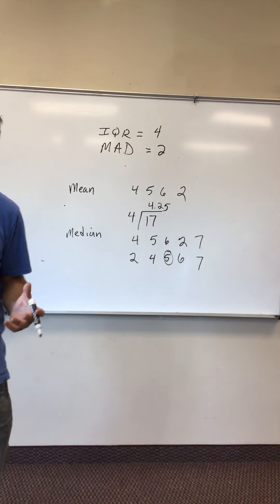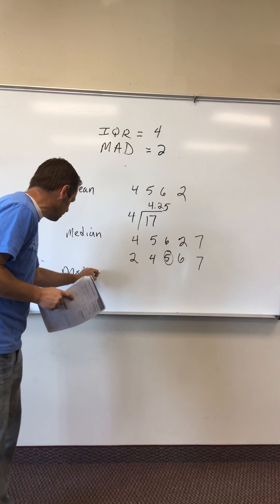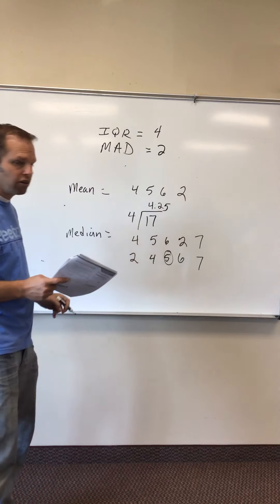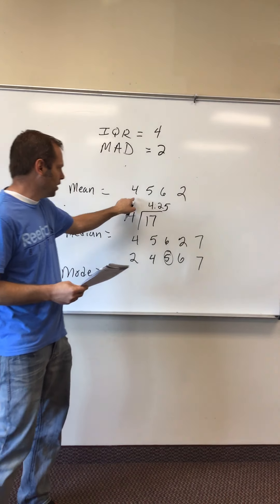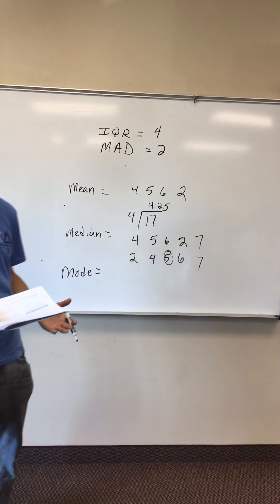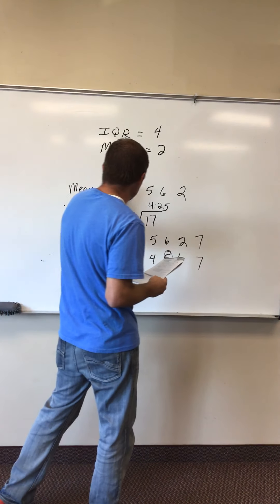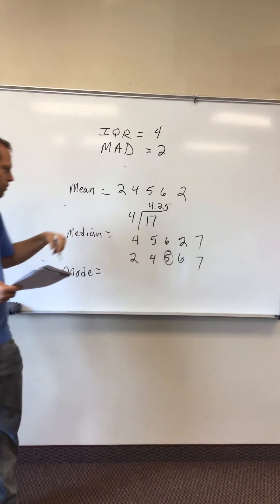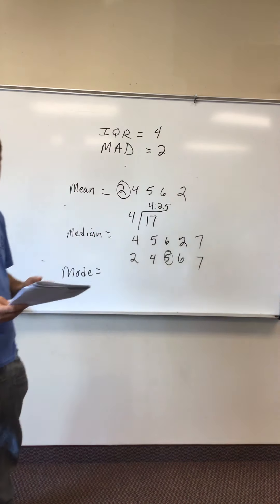If I have two numbers that are in the middle, I just go to the middle of both of those numbers. Mode, of course, is the number that occurs the most often. I think 'mo' and I think 'most'—that's how I remember that one. In this case, 4, 5, 6, 2, all the numbers occur one time, so all of them would be the mode. But if I had, let's say, two 2s, a 4, 5, 6, and 2, then my mode would be 2 because it happened twice.